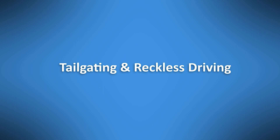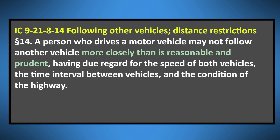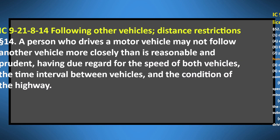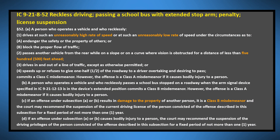Now let's look at tailgating and reckless driving. The key words in this statute are more closely than is reasonable and prudent, taking into account the stopping distance needed for the road conditions and the speed of each vehicle. Tailgating is a serious hazard and the laws against it are being strictly enforced. It could also figure into a reckless driving charge. One interesting thing about reckless driving is that you can be charged for driving too slowly or too fast, and it can also be reckless to refuse to allow someone to pass you, or for passing someone on a curve or where visibility is less than 500 feet. Reckless driving moves up to Class B if there's property damage or if you pass a school bus with its stop sign displayed, and it becomes a Class A misdemeanor if a person is hurt.